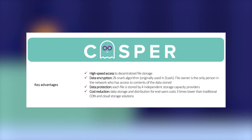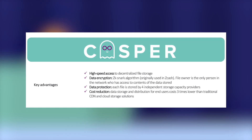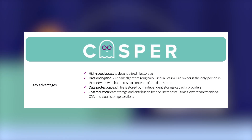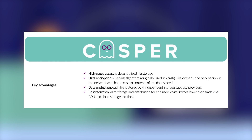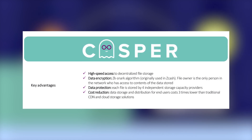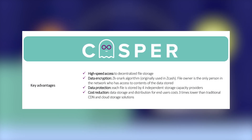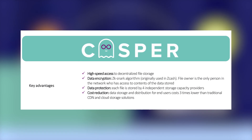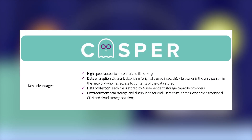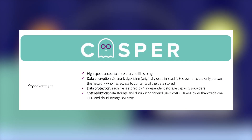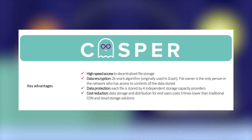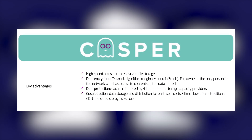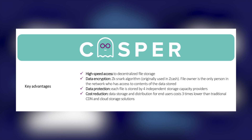Casper API has the following advantages. The maximum speed of work with the ability to choose any convenient blockchain. Casper API supports work with any platform based on the use of smart contracts. Encryption of operations using the ZK-SNARK algorithm, as well as the reliable P2B protocol, makes the storage of user data as secure and safe as possible.